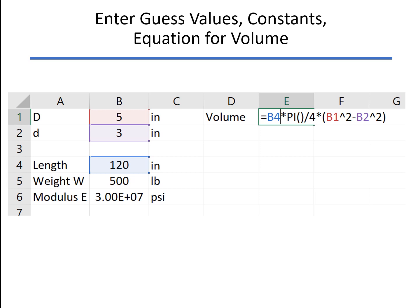So I've got D and d, my guess values. So I'm guessing five inches outer diameter, three inches inner diameter. The length, the weight, and the modulus are constants, so we put those in.